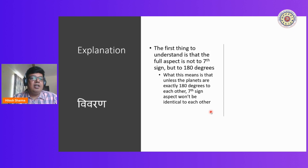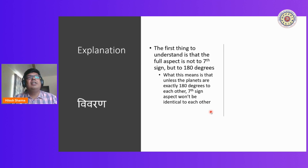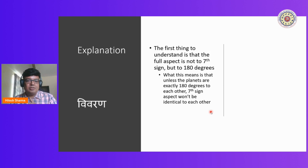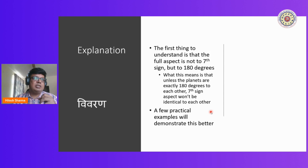The first thing to understand is that a full aspect is not an aspect on the 7th sign as is commonly understood, but is an aspect on 180 degrees. That's a difference. A sign is 30 degrees — a sign has a span of 30 degrees. A planet does not aspect all 30 degrees of the sign 7th to it equally. It aspects fully exactly 180 degrees from where it is positioned. From there onwards, the aspect is unequal — it will be less than full.